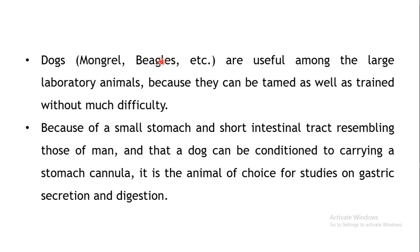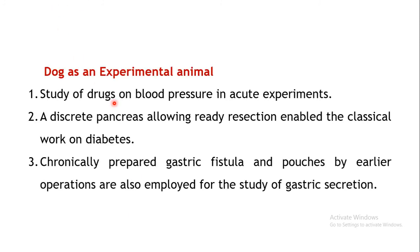The next animal is the dog; the species name is Canis familiaris. Mongrels or beagles are commonly used. Dogs are friendly, easily tamed and trained, and have characteristics resembling those of humans, including a small stomach and short intestinal tract. They can be trained to carry a stomach cannula, making them the animal of choice for studying gastric secretions and digestion.